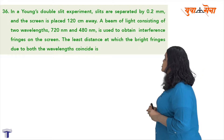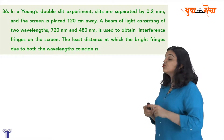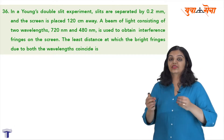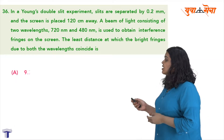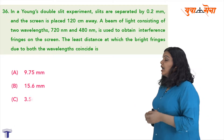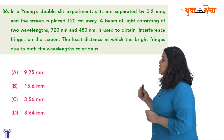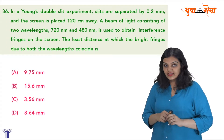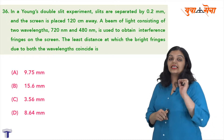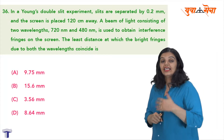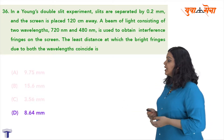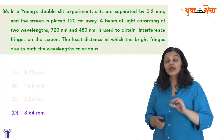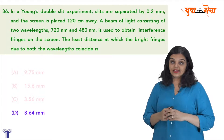The least distance at which the bright fringes due to both the wavelengths will coincide is what has been asked of us. The options given are 9.75 mm, 15.6 mm, 3.56 mm, and 8.64 mm, and the answer to this question comes out to be 8.64 mm. Let's quickly take a look at how we get this answer.